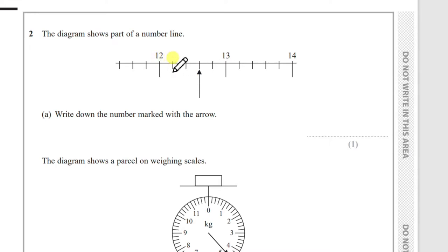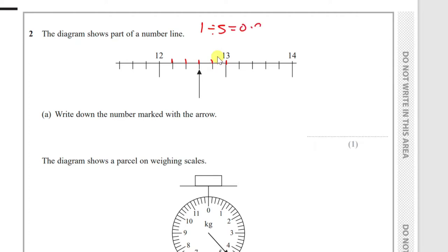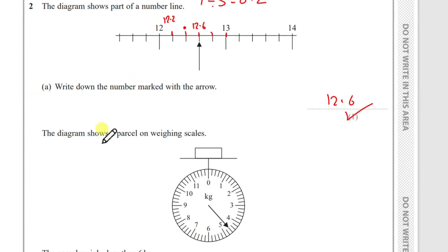Question 2: the diagram shows part of a number line. It shows 12 and goes up in some increment. Count the divisions — there are 5 parts. The difference between 12 and 13 is 1, divided by 5 gives 0.2. So it goes up in 0.2s. Part (a)'s marked number is 12.2, then 12.4, then 12.6.